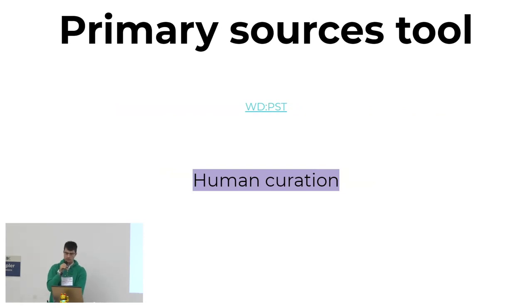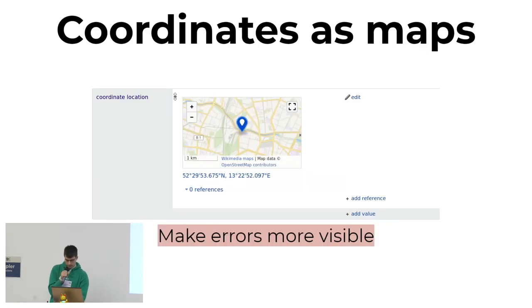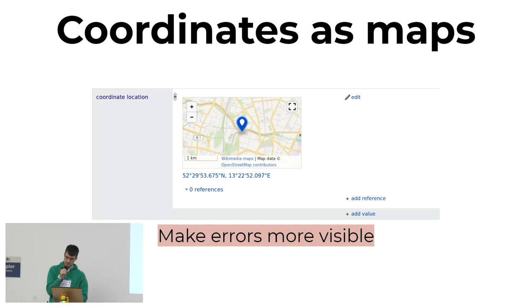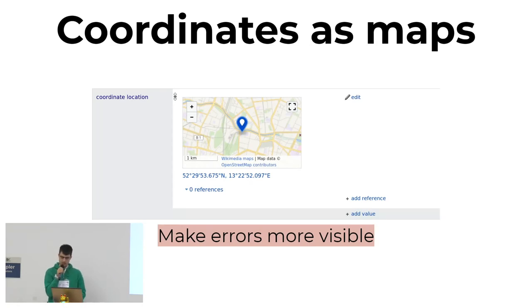The primary sources tool is for any database that you want to import but that's not high enough quality to directly add to Wikidata. So you add it to the primary sources tool instead, and then humans can decide whether they should add these individual statements or not. Showing coordinates as maps is mainly a convenience feature, but it's also useful for quality control — like if this is supposed to be the office of Wikimedia Germany and the coordinates are somewhere in the Indian Ocean, you know something is not right.